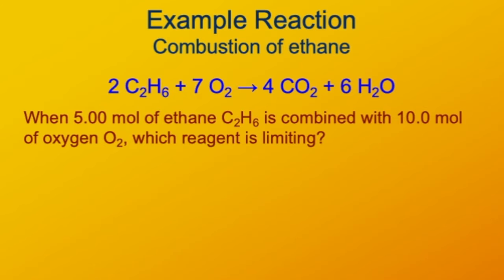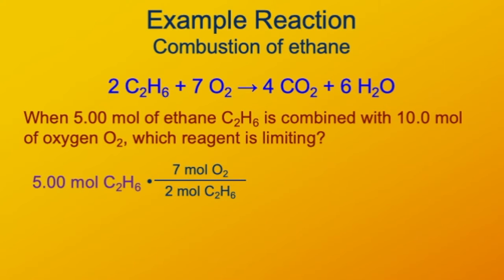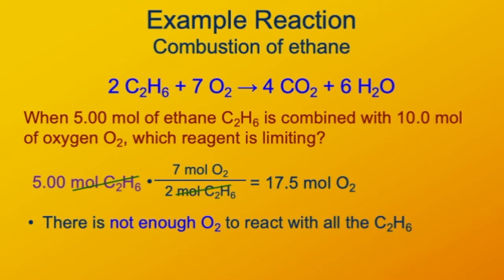Using the same reaction again, we'll combine 5 moles of ethane and 10 moles of oxygen and find which one is limiting. It doesn't matter which one you start with — here we'll start with the ethane. So for 5 moles of ethane, what's the equivalent molar amount of oxygen? We know there are 7 moles of oxygen for every 2 moles of ethane, so we use that as our conversion factor. The moles of ethane cancel out and we find that the equivalent amount of oxygen is 17.5 moles. We need 17.5 moles, yet only 10 moles are present, so there's not enough oxygen to react with all of the ethane — oxygen is the limiting reagent.